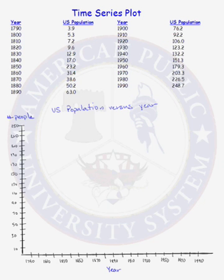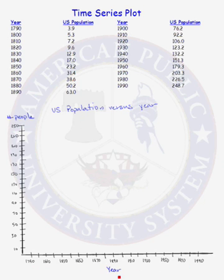The first thing we do when constructing the time series plot is to create our x-axis, our y-axis, the title of the time series plot, and label the x-axis and y-axis. Along the x-axis we have time, which is the year in our particular data set. The y-axis represents the number of people, and we are graphing the U.S. population versus the year.